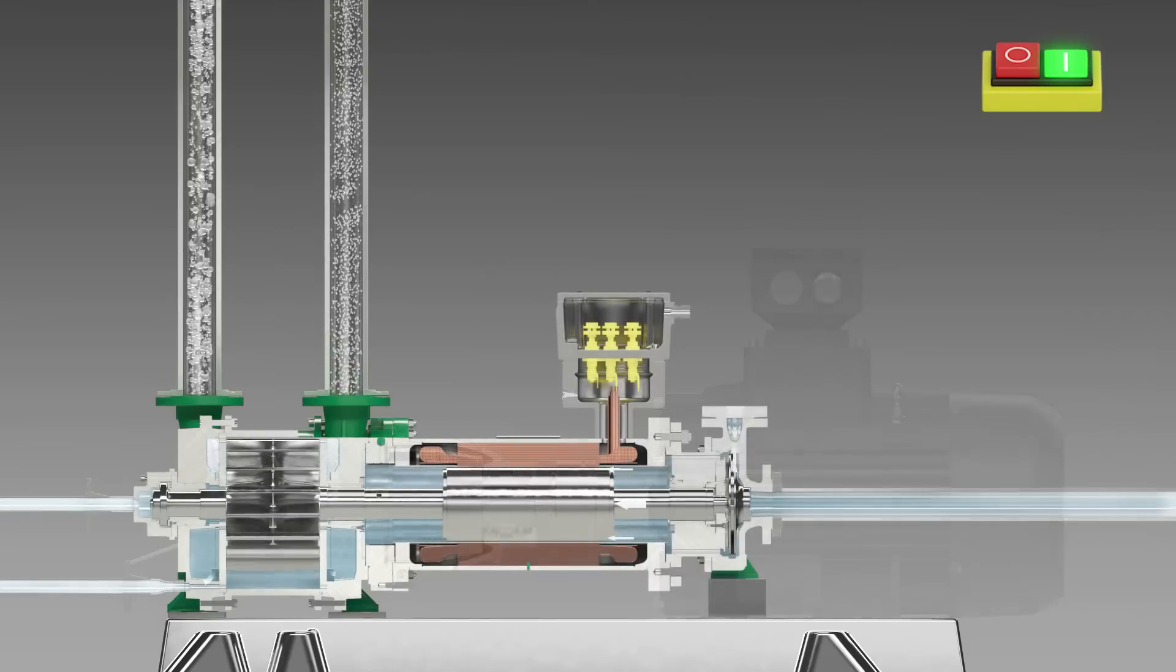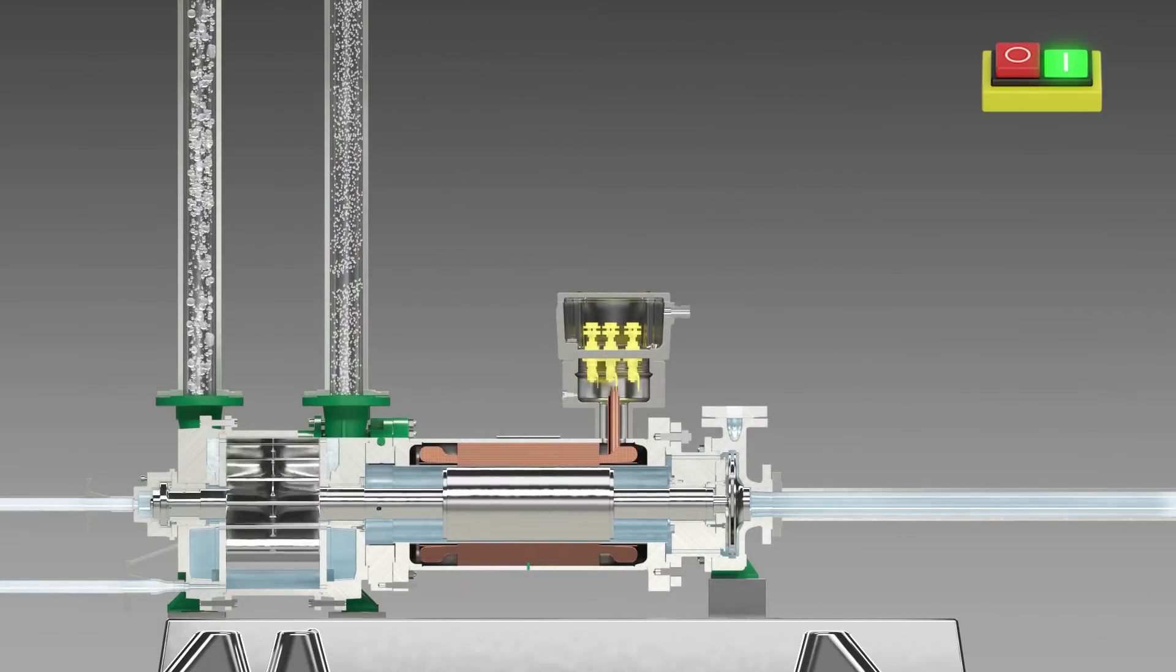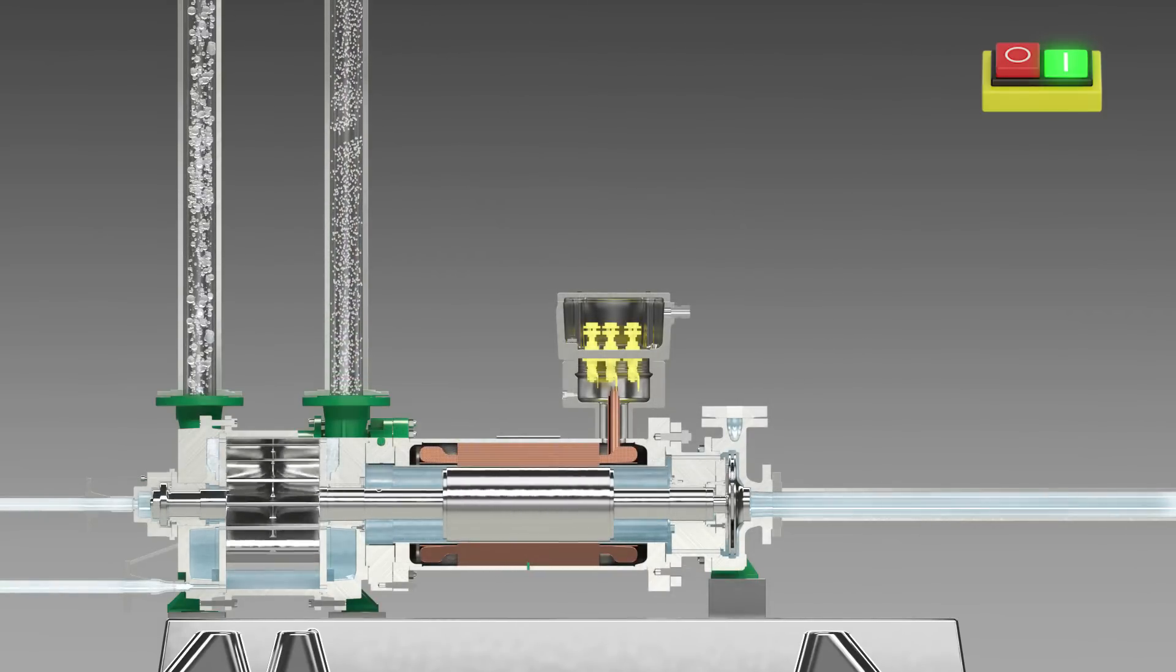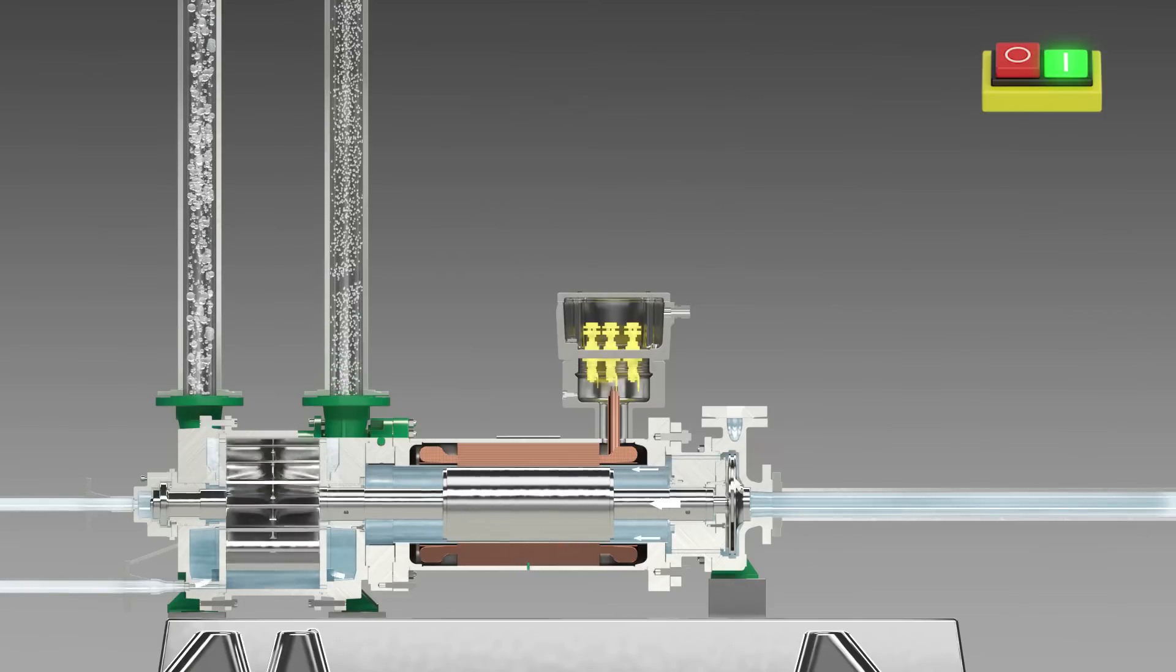The liquid ring vacuum pump with a canned motor does not need the separately arranged standard motor and coupling. This results in a compact and short pump unit.